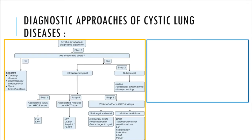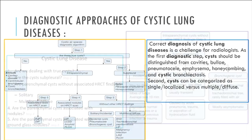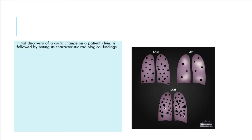Diagnostic approaches for cystic lung diseases: correct diagnosis is a challenge for radiologists. As the first diagnostic step, cysts should be distinguished from cavities, bullae, pneumatoceles, emphysema, honeycombing, and cystic bronchiectasis. Second, cysts can be categorized as single/localized versus multiple/diffuse. Initial discovery of a cystic change is followed by noting its characteristic radiological findings.